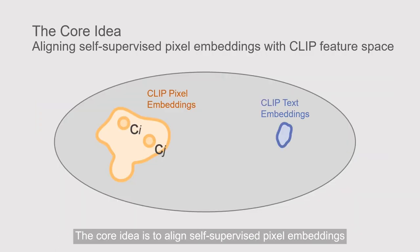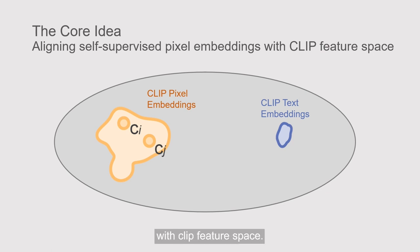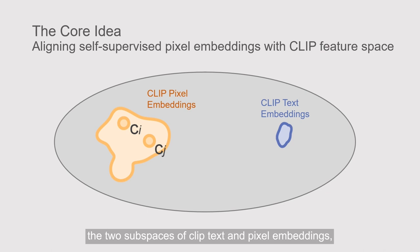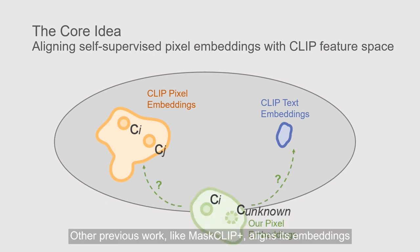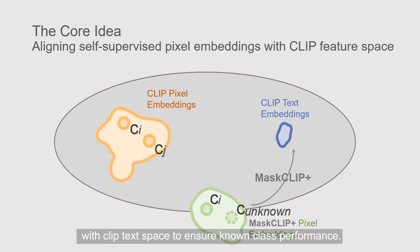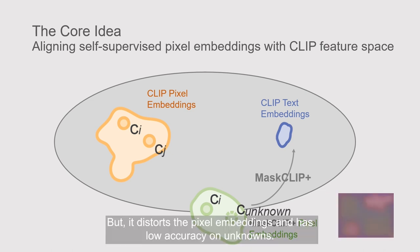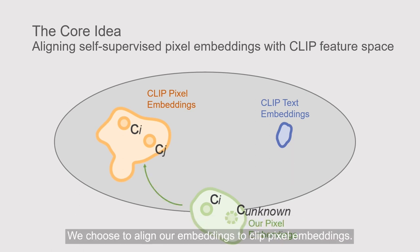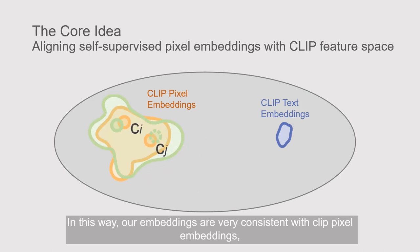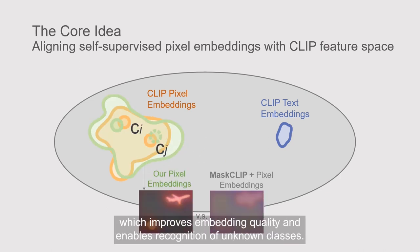The core idea is to align self-supervised pixel embeddings with the CLIP feature space. We observe that there is still a huge gap between the two subspaces of CLIP text and pixel embeddings, although they are trained jointly. Therefore, we can only align our pixel embeddings to either one of them. Previous work, like MaskCLIP+, aligns its embeddings with CLIP text space to ensure known class performance, but it distorts the pixel embeddings and has low accuracy on unknowns. We choose to align our embeddings to CLIP pixel embeddings.